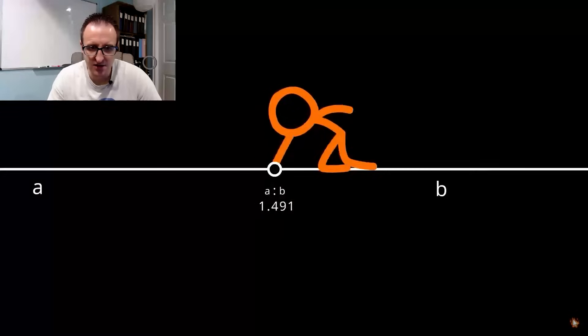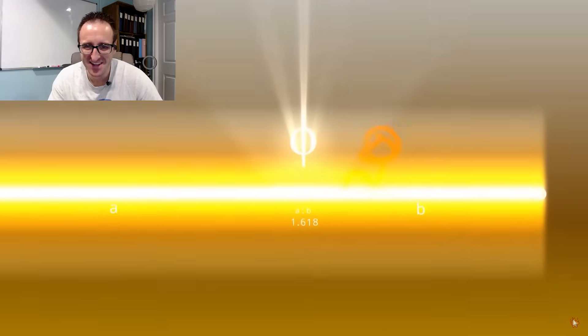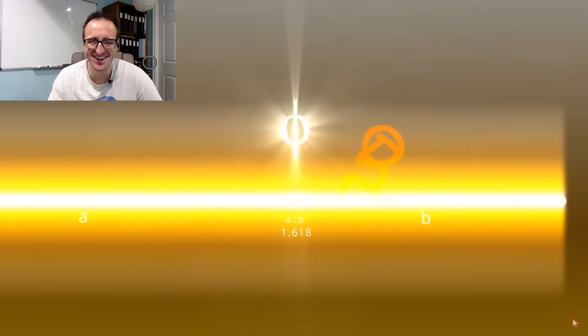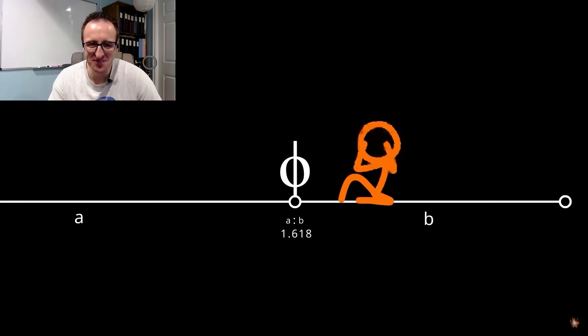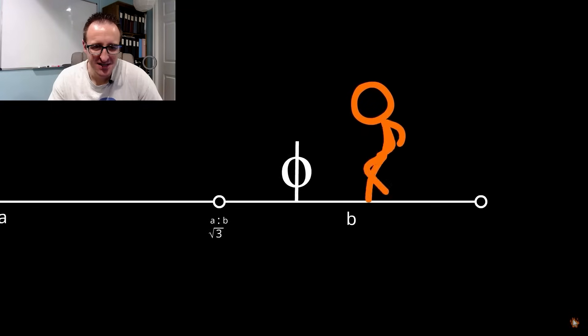So now here it's looking at the ratio from A to B and there's a bright light here at the golden ratio. That's pretty cool. Yeah, phi is usually what we use to refer to the golden angle. That's our golden ratio. That's pretty cool.